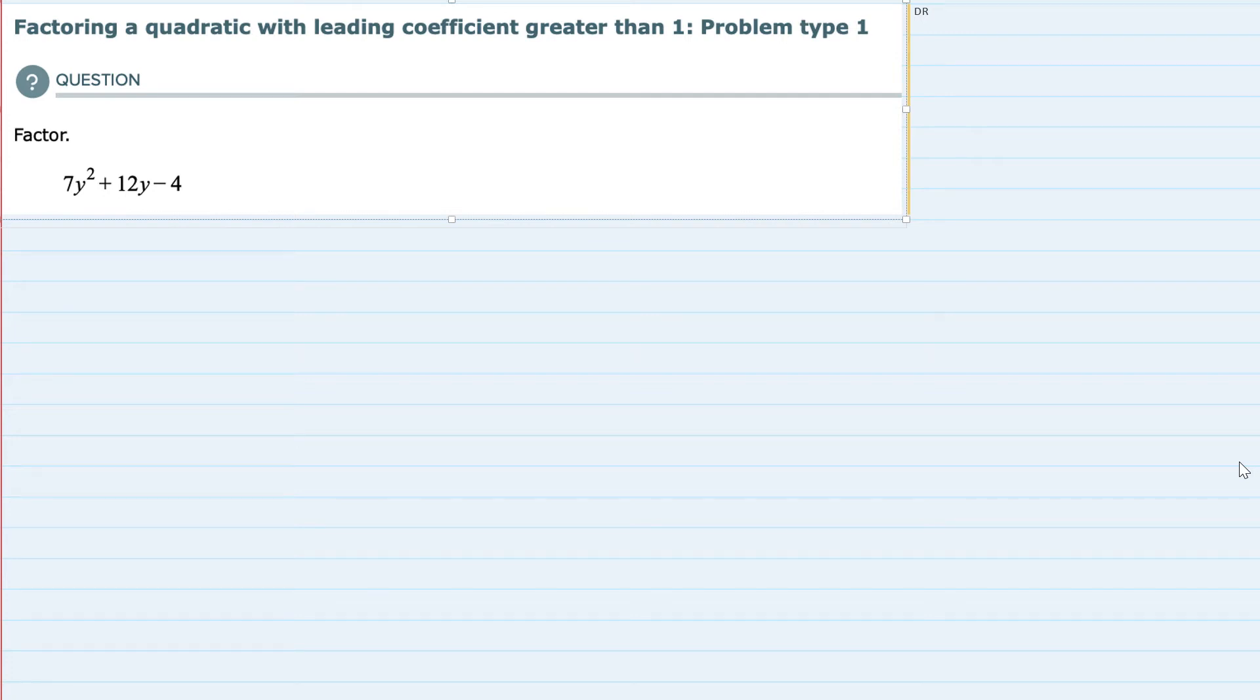Hello. In this video, I'll be helping you with the ALEKS problem type called Factoring a Quadratic with Leading Coefficient Greater Than 1, Problem Type 1. We're asked to factor 7y² + 12y - 4, and I'm going to do something a little bit different this time. I'm going to actually show two methods for factoring this.